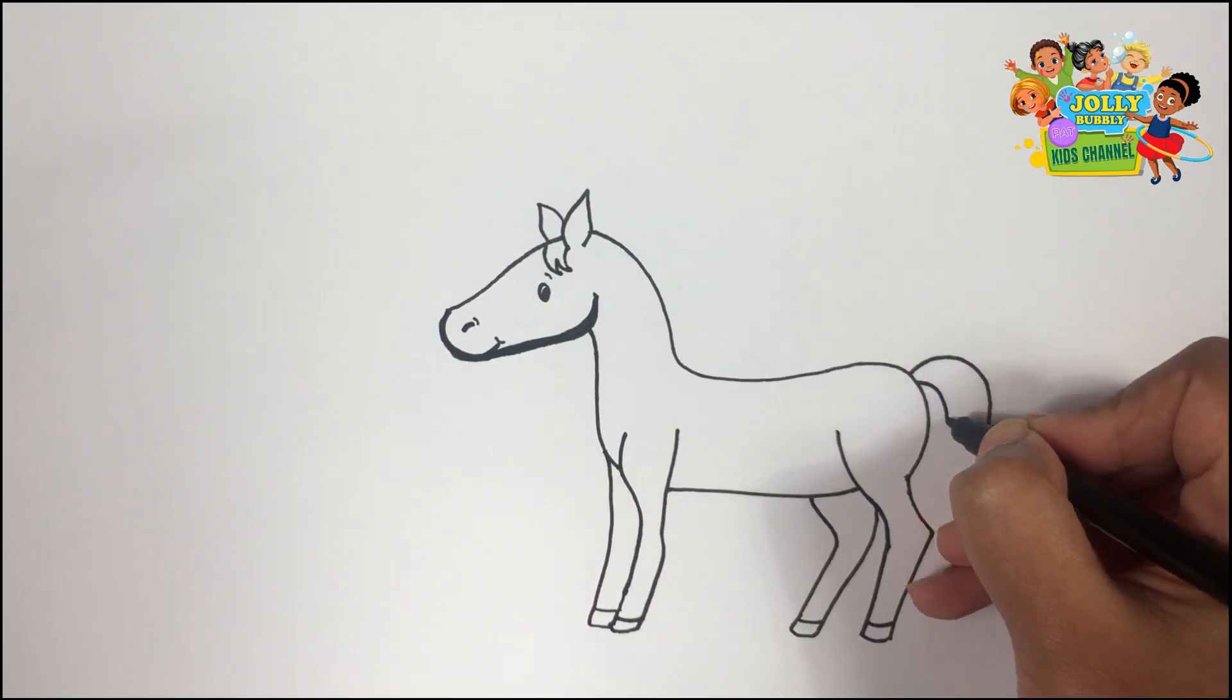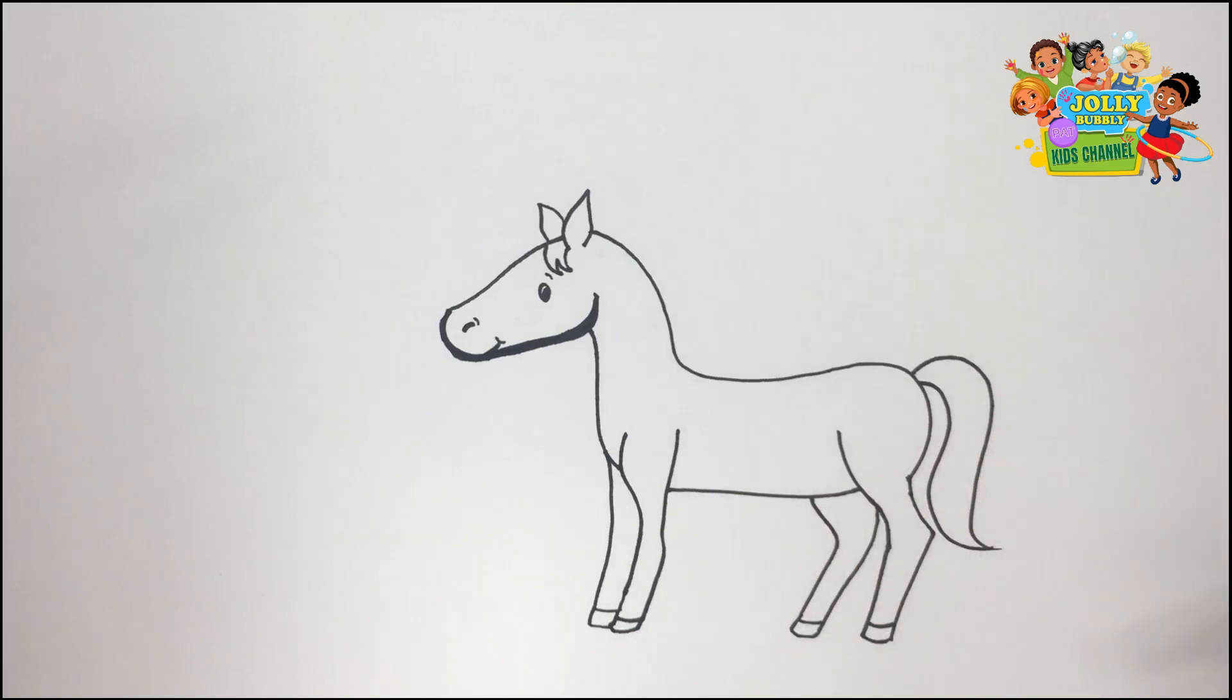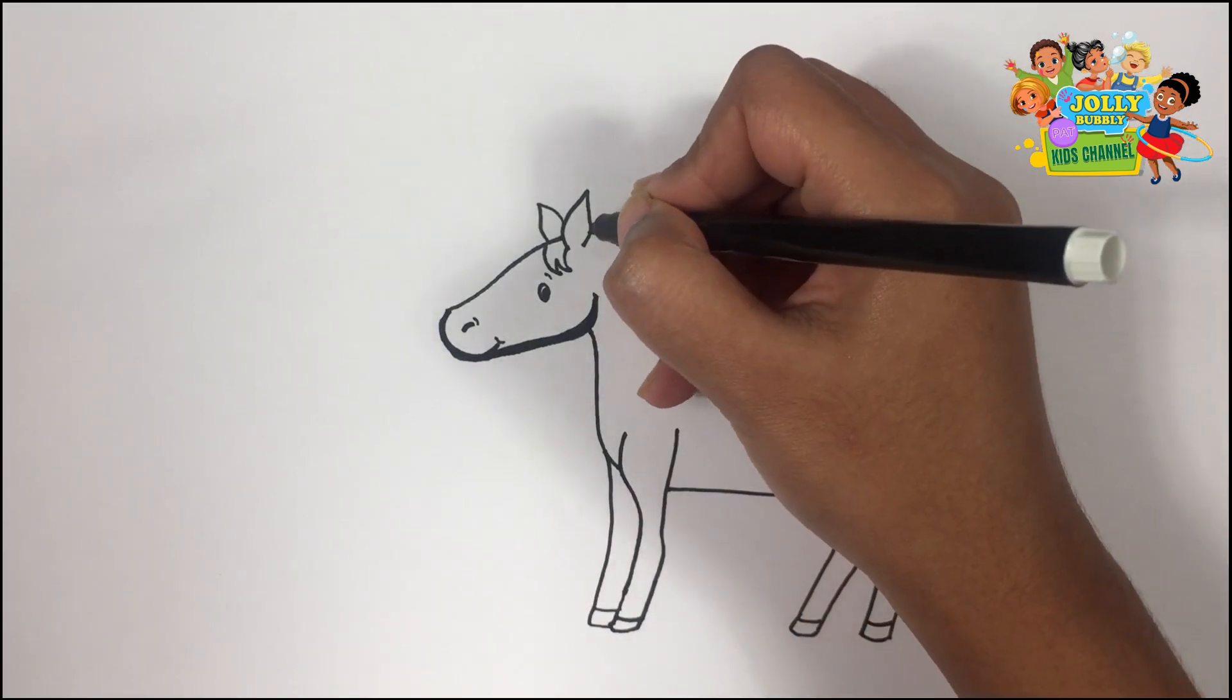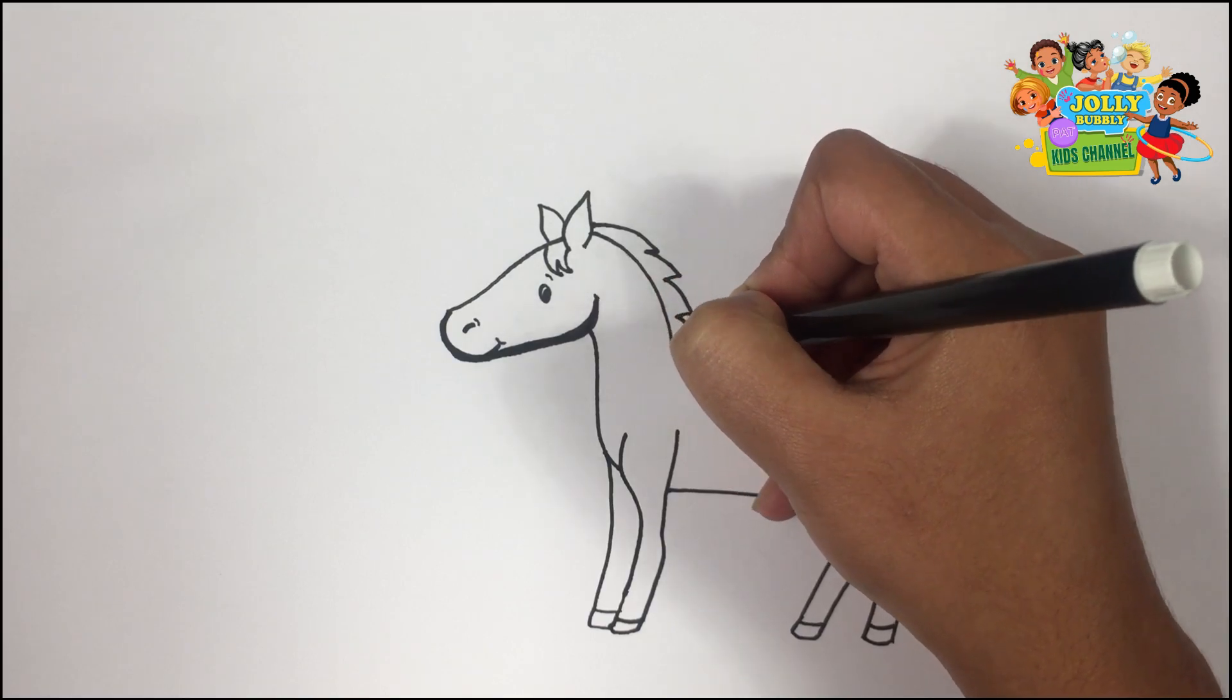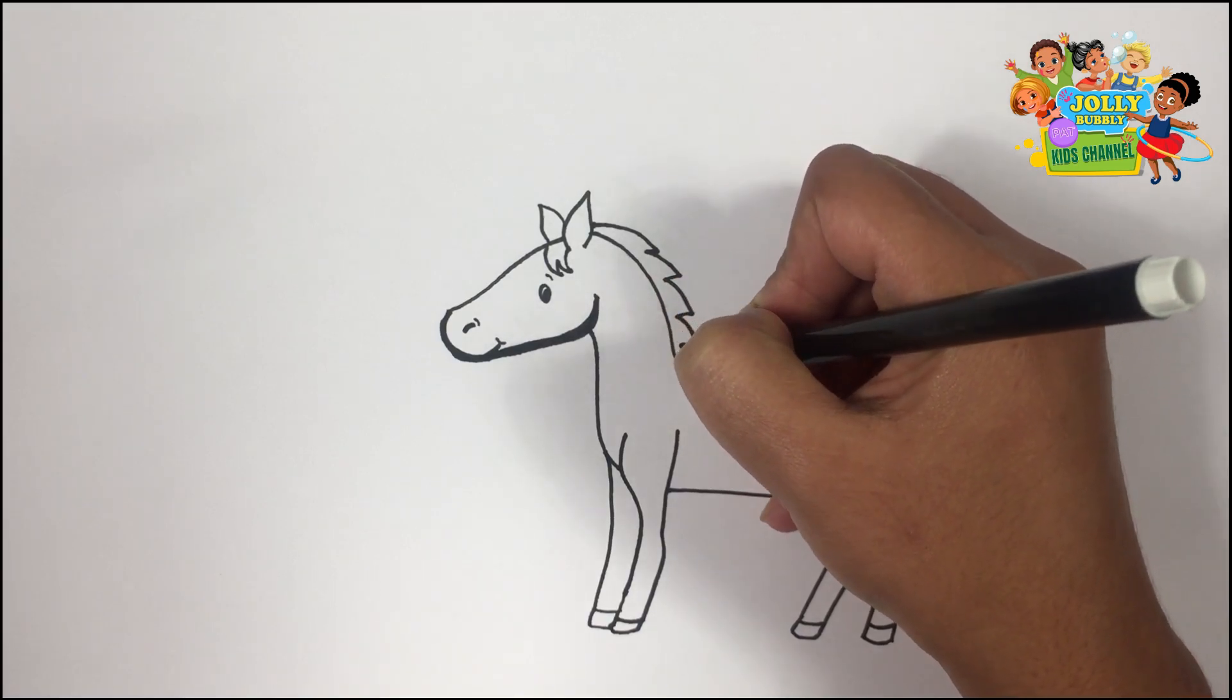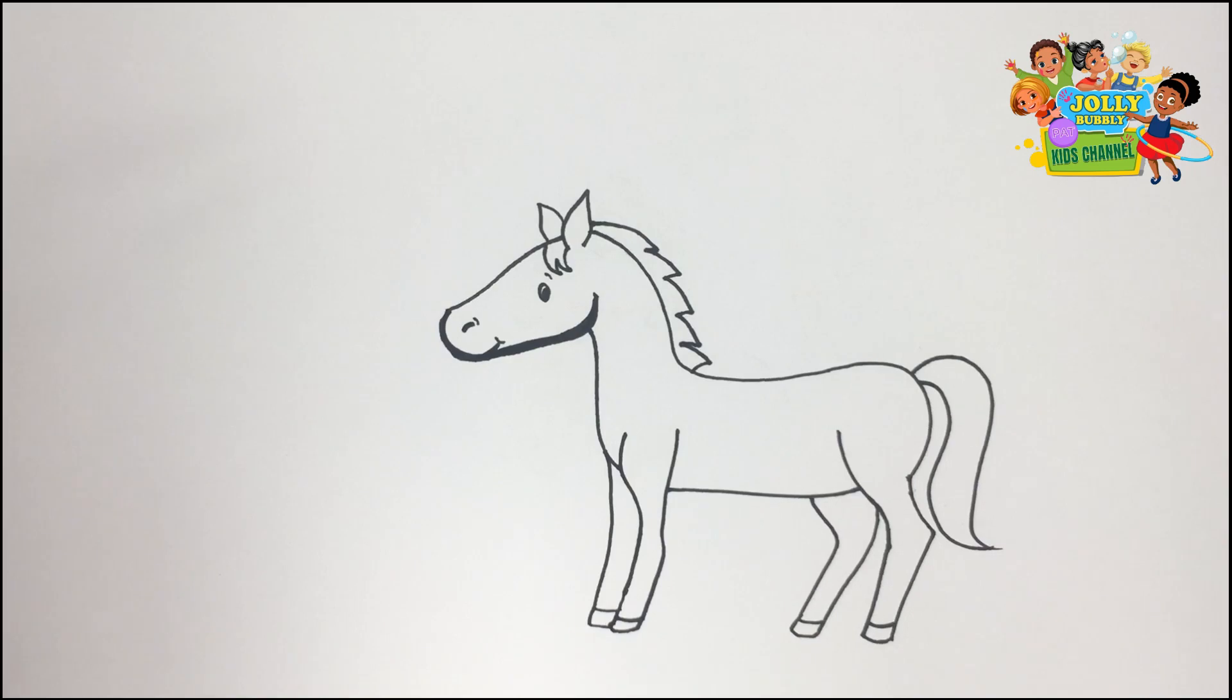Now I'm drawing its tail. My drawing is done. Now let's start coloring. To do the coloring, I'm using my deep warm gray pen.